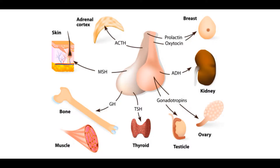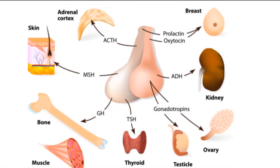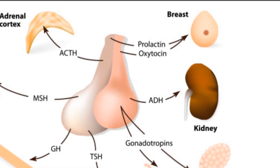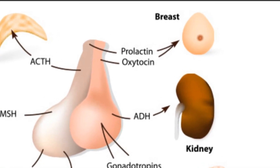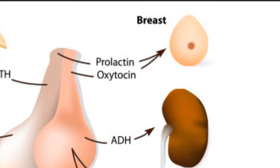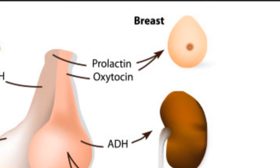Depending on the hormones and the cells that produce those hormones, you're going to have different types of functioning adenomas, known as functioning pituitary tumours. So you have prolactin, which promotes lactation in the breast — so you have prolactinoma. Symptoms include amenorrhea in women, galactorrhea, impotence in men, and gynecomastia.